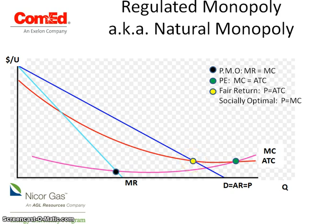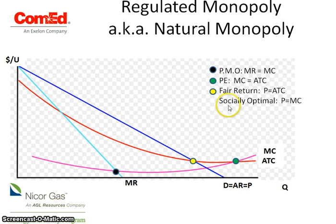The tradeoff with the fair return price is that they're not at the allocatively efficient point where price equals marginal cost. They're not meeting the right mix of goods and not producing what society wants, so there won't be enough of it. You get it where they can cover their costs, but not enough for society. The other option is the socially optimal price, where the formula is price equals MC — the allocatively efficient condition — meaning they're making exactly what society needs.